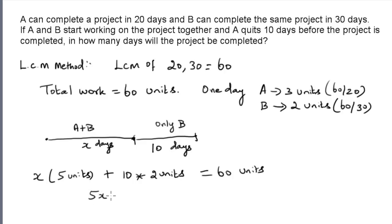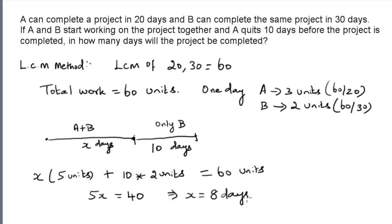Obtaining the equation: 5X plus 20 equals 60 units. Taking 20 to the right-hand side, 5X equals 40, so X equals 8 days. To answer the question, the overall number of days required to complete the project will be 8 plus 10, which is 18 days.